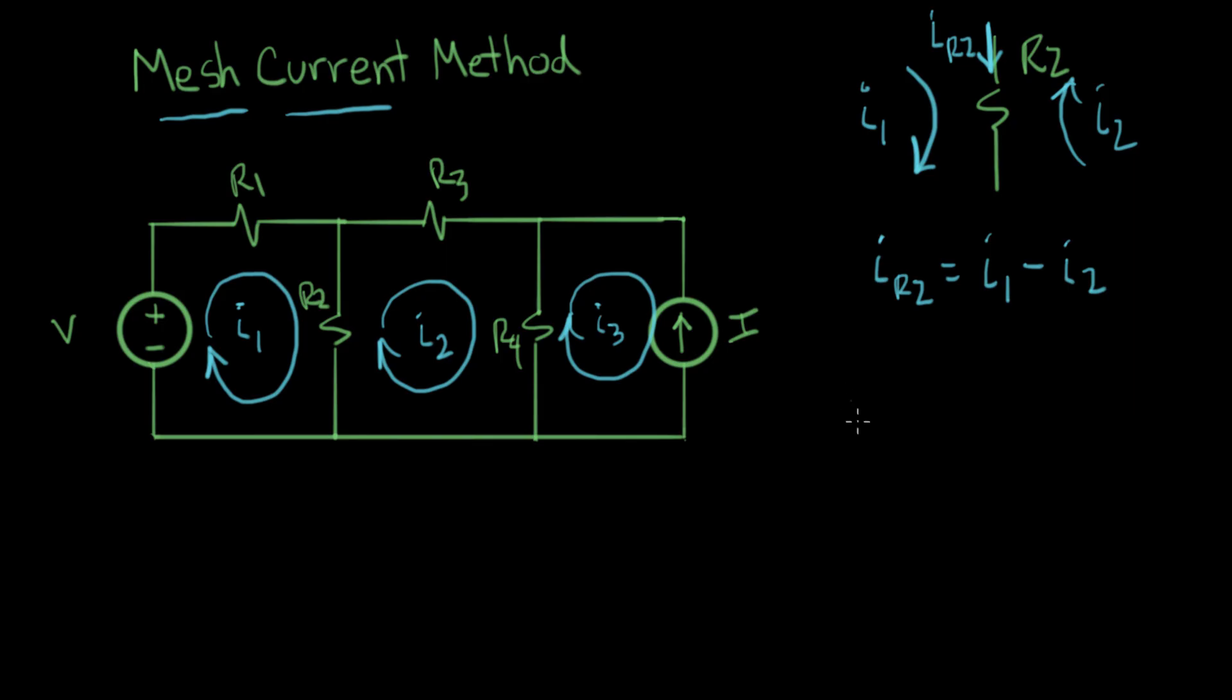So next, since this is a method, I'm going to list out the steps of the method. The mesh current method is: first thing is to draw the meshes. We did that over here when we drew I1, I2, and I3.